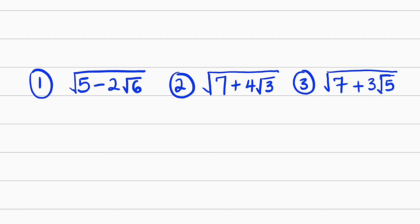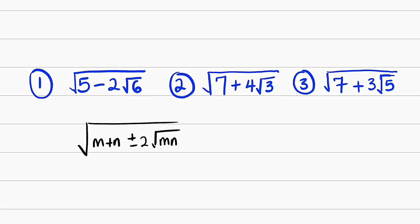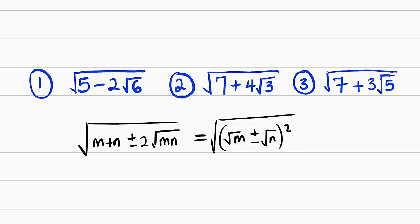Okay, before you start, I would like to let you know that you can only do this if you can transform the surd in this form. If you have a square root of m plus n, then plus or minus 2 multiplied by √(mn), this is exactly equal to square root of m plus or minus square root of n, all squared. From here, the power of 2 will just cancel the square root, and this will be equal to square root of m plus or minus square root of n.